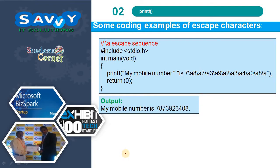Next are coding examples of escape characters. Using \a, with a number like 9, 8, 7, 3, 9, 2, 3, 4, 0, 8 — it prints the same value on the output, but \a causes the system to take some time to produce an alarm or beep sound before printing.